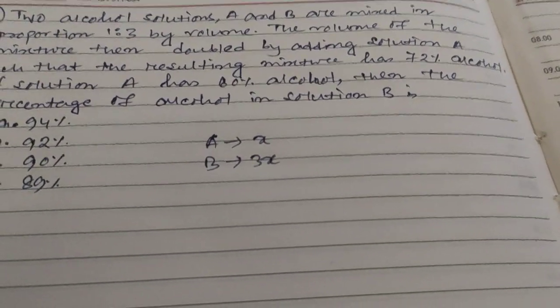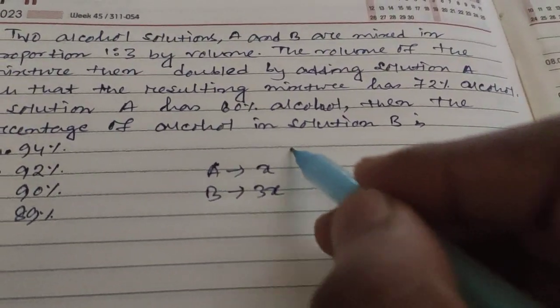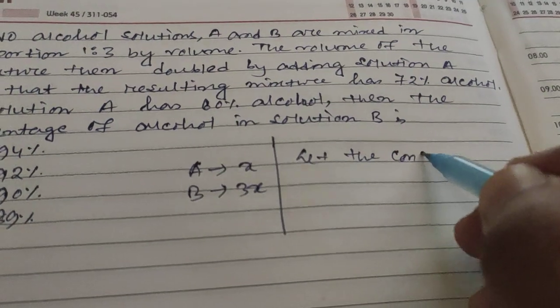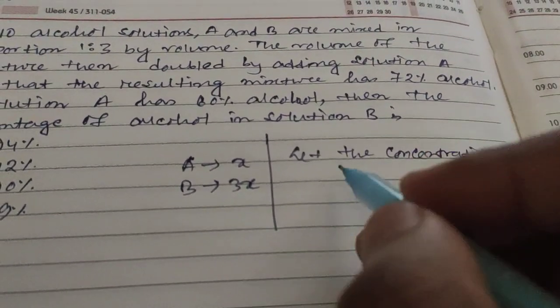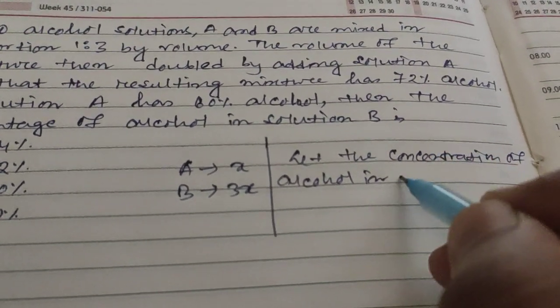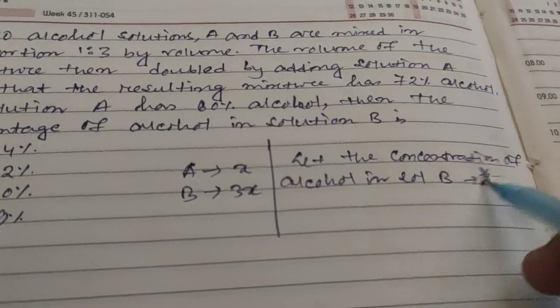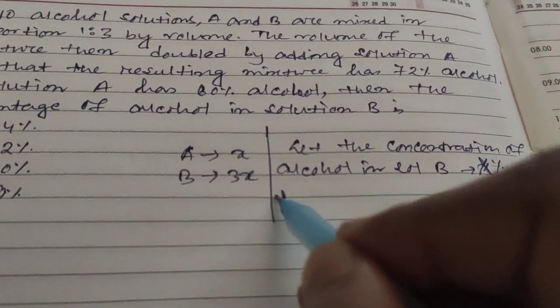Let the concentration of the alcohol in solution B be capital X percent. So total quantity is x plus 3x, which is 4x.